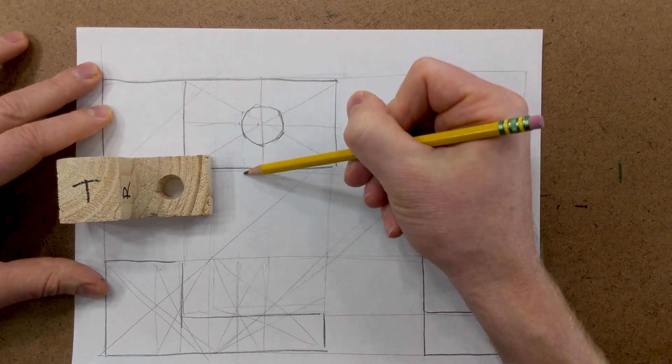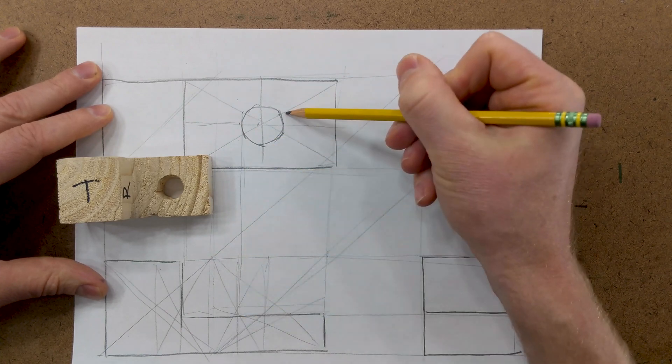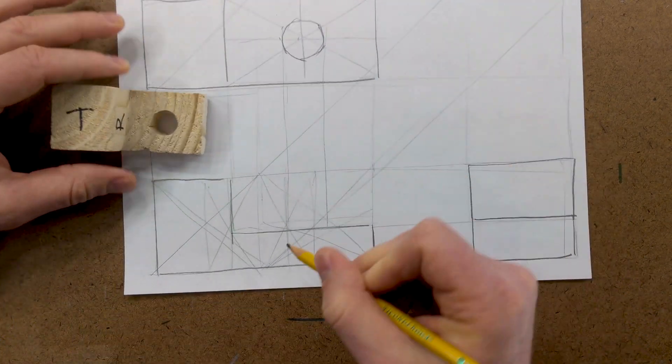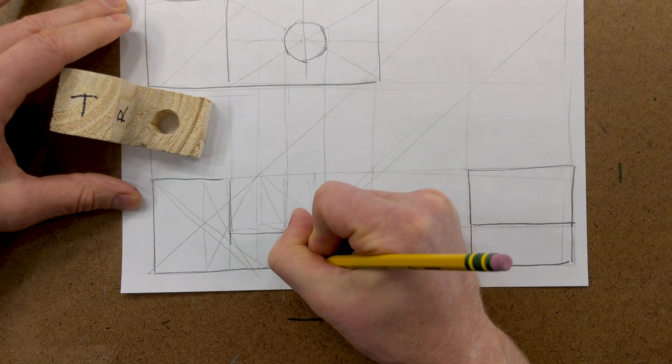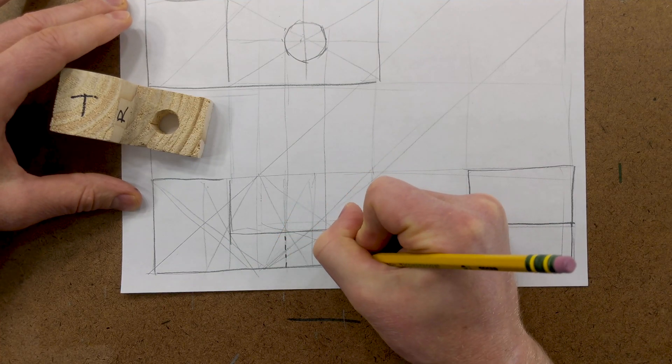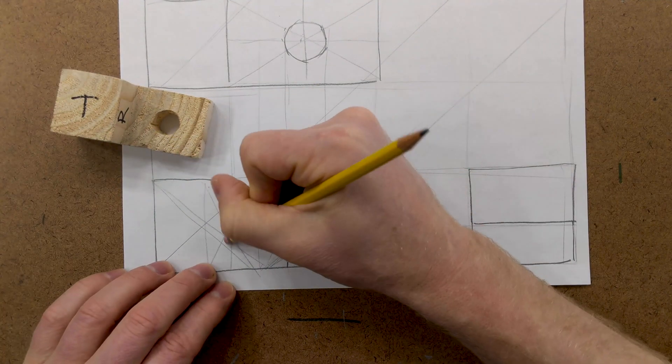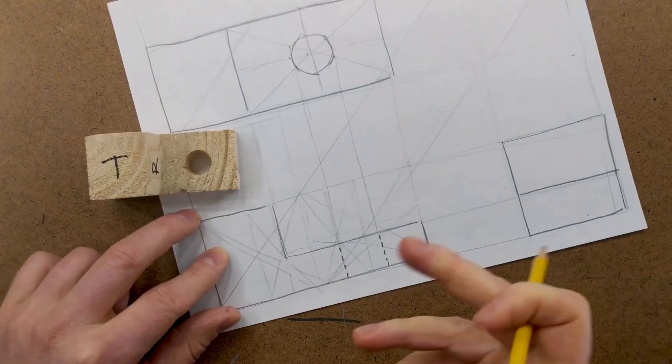And we can just drop these lines down, and then to indicate that this is inside, we can draw dotted lines. Don't be afraid to use your eraser, but you can also just leave your marks there.